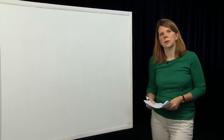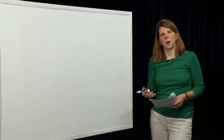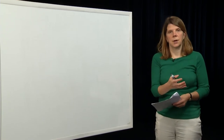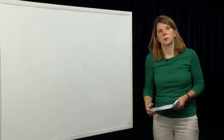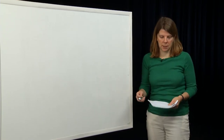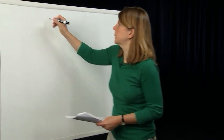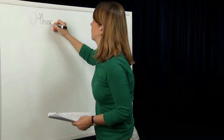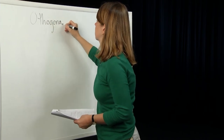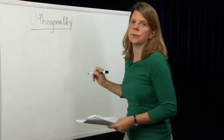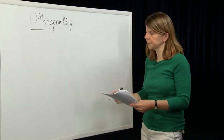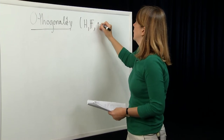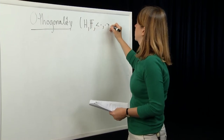Let's start by looking at the concept of orthogonality — of a subspace of a vector space being orthogonal to another subspace. We'll start with our Hilbert space H over the field F endowed with an inner product.